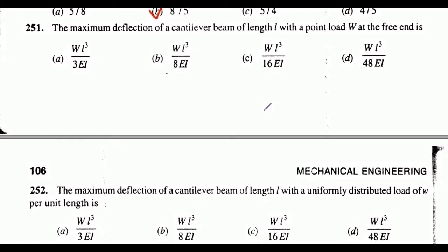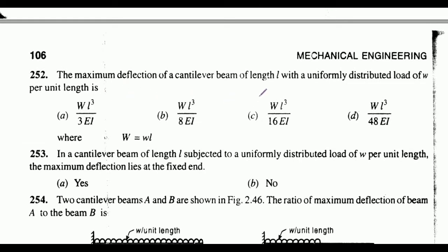Question 251: The maximum deflection of a cantilever beam of length l with a point load w at the free end. The correct answer is option A: wl³ / 3EI. Next, the maximum deflection of a cantilever beam of length l with a uniformly distributed load of w per unit length — where capital W = small w × l — the correct answer is option B: WL³ / 8EI.